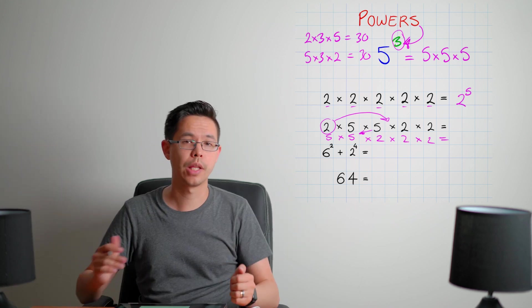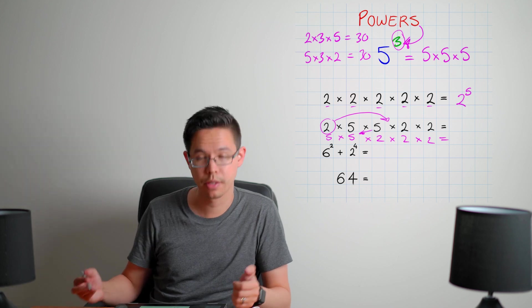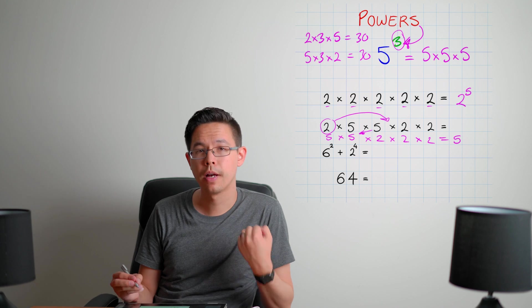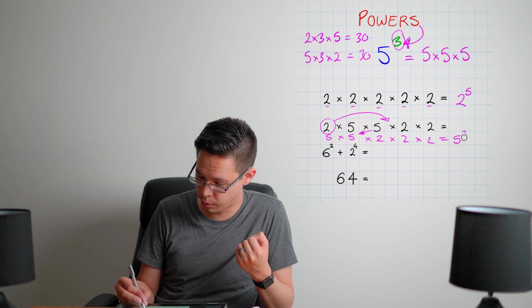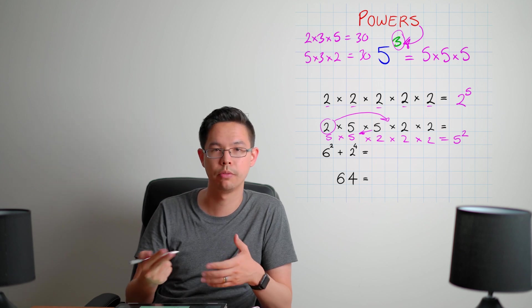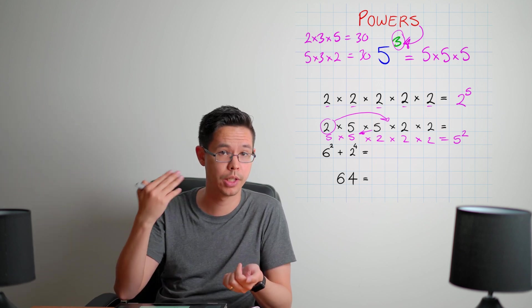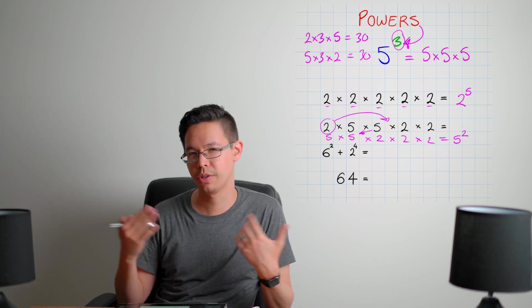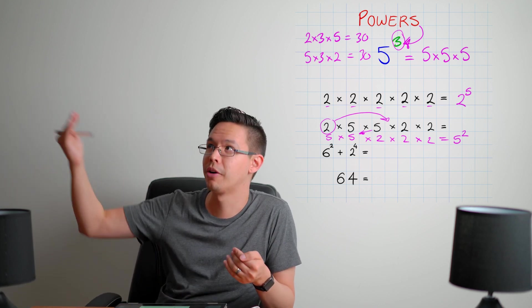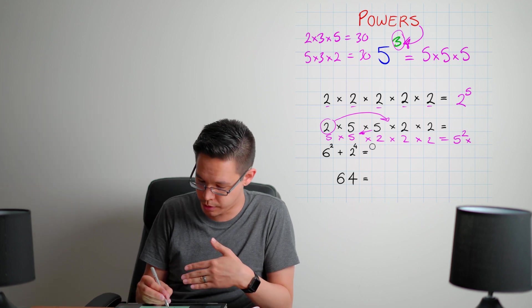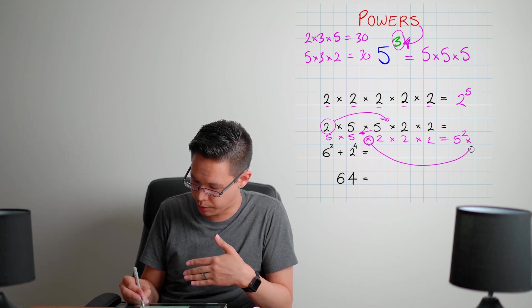Well, now I can start gathering the fives together and I can gather the twos together. So there's five times by itself twice, so that's five squared. If there's a power that's two, we refer to that as squared. If it's to the power of three, we call that cubed. If it's to the power of four or anything else, we just don't bother - we just call it to the power of four, to the power of five. All right, so we've got five squared times by, because remember this little times symbol here still carries along.